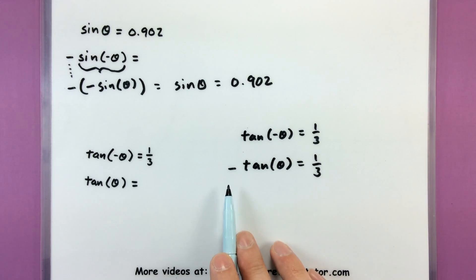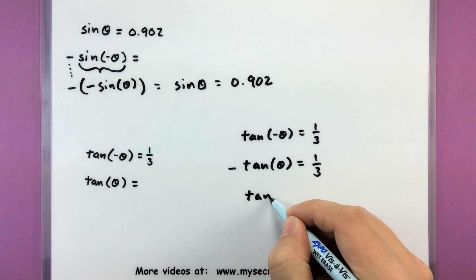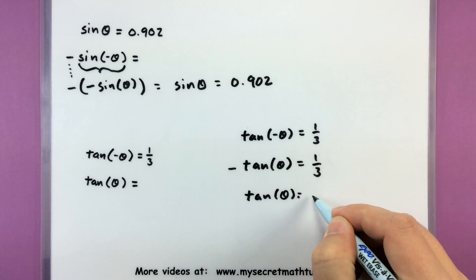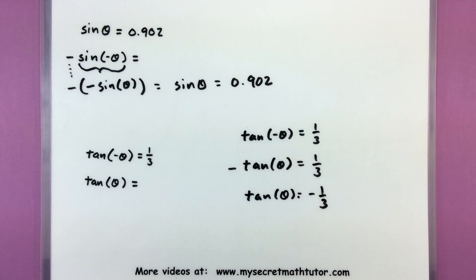Since these are identities, they would both equal the same thing. All right, I really want to know about tangent of theta, not negative tangent of theta. So let's move that negative sign to the other side. All right, and there's my answer. Tangent of positive angle equals negative one-third.